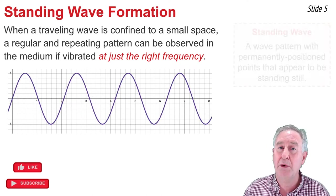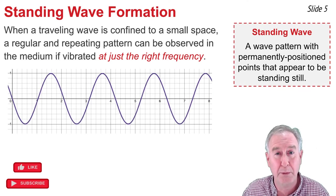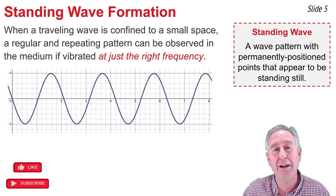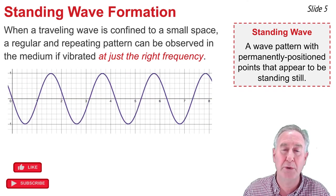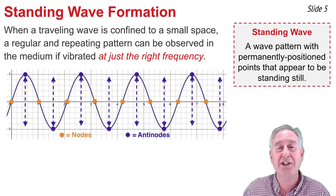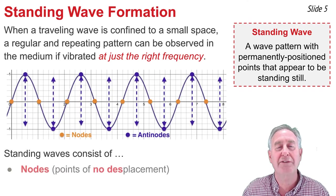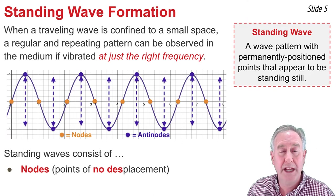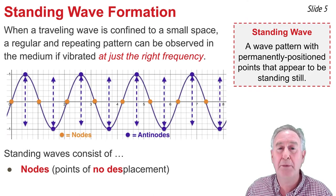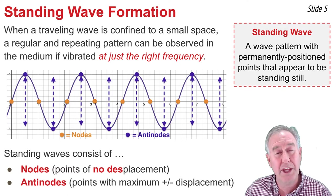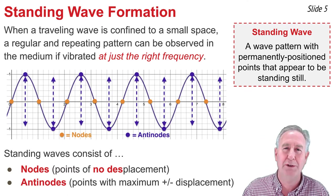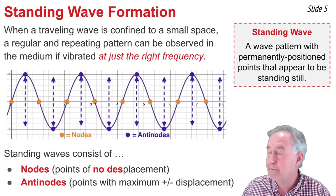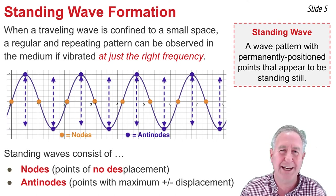You'll also notice that there's points along the medium of this purple wave that appear to not be moving at all. That's what makes this a standing wave, a wave pattern with permanently positioned points that appear to be standing still. A standing wave consists of nodes, points of no displacement. Those are represented by the orange dots in this diagram. In between every orange dot, you'll notice there's a purple dot. Those purple dots aren't nodes. They're the opposite of nodes, and we call them anti-nodes, points of maximum positive and negative displacement. All standing waves consist of patterns like this with nodes and anti-nodes.